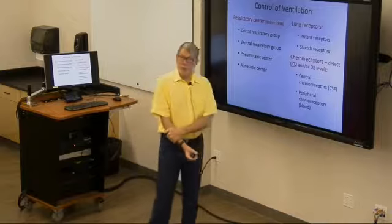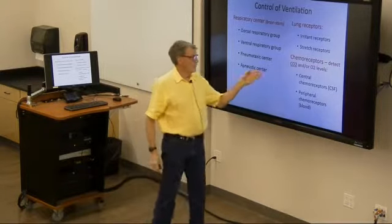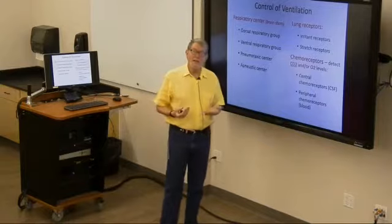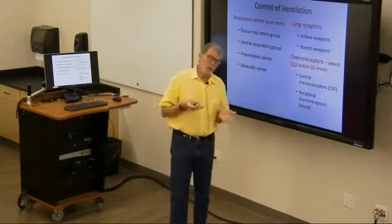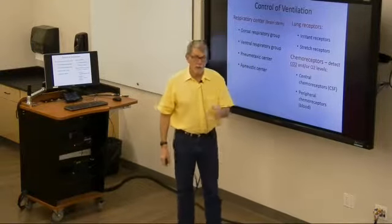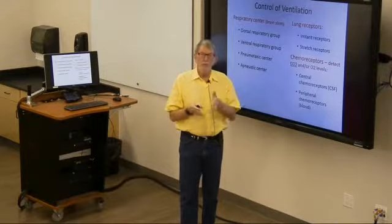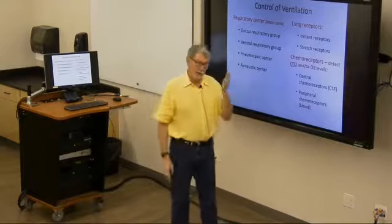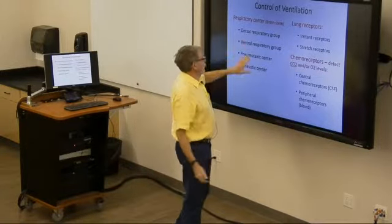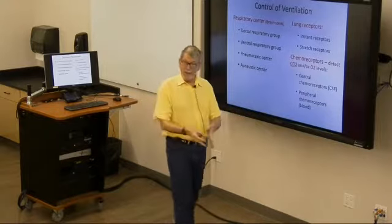Control of ventilation comes from your respiratory centers. You have chemoreceptors that detect CO2 and oxygen levels. Peripheral chemoreceptors in the carotid sinus measure oxygen and CO2 levels in the blood and send signals to tell you to breathe faster or slower. Within the central nervous system in the cerebrospinal fluid, you only detect CO2 levels, so you respond only to high CO2 by sending signals to make you breathe faster. These signals are sent to respiratory centers, which send appropriate signals to inspiratory and expiratory muscles so you breathe at the right rate.